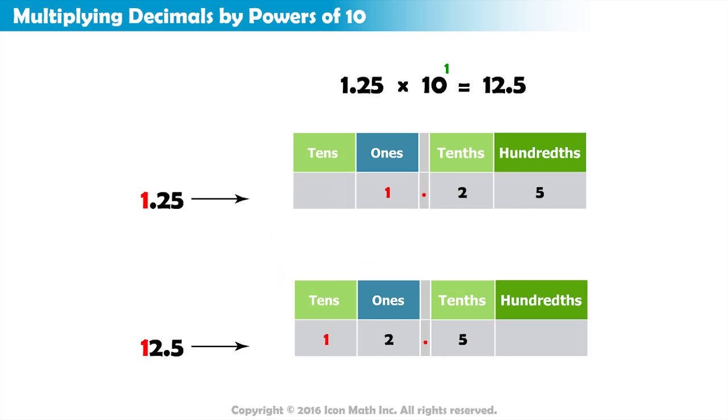1 became 10, which means it moved from the ones place to the tens place, and 2 tenths became 2. So, it moved from the tenths place to the ones place, while 5 hundredths became 5 tenths, which means it moved from the hundredths place to the tenths place. In other words, each digit moved one place to the left.